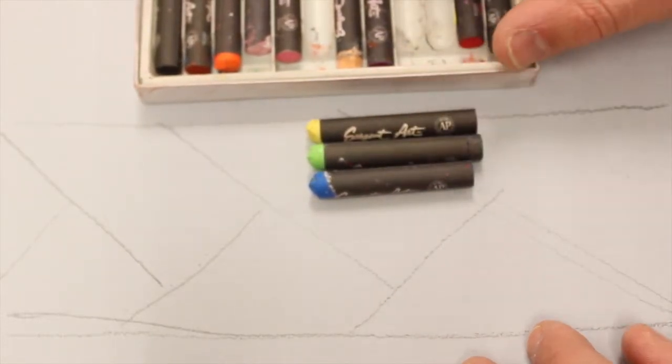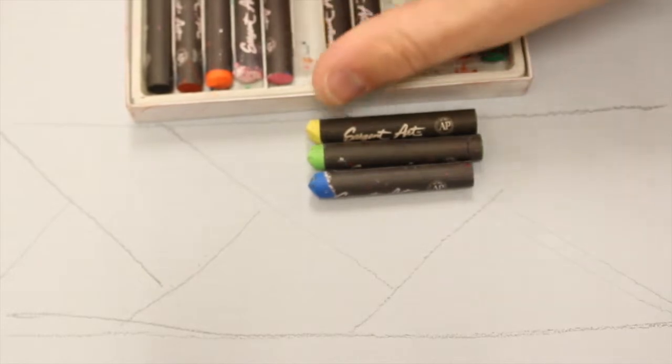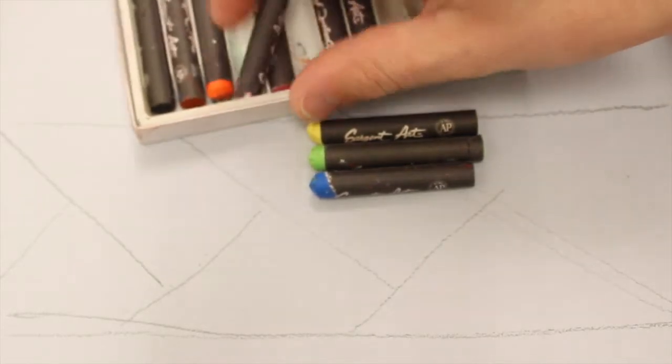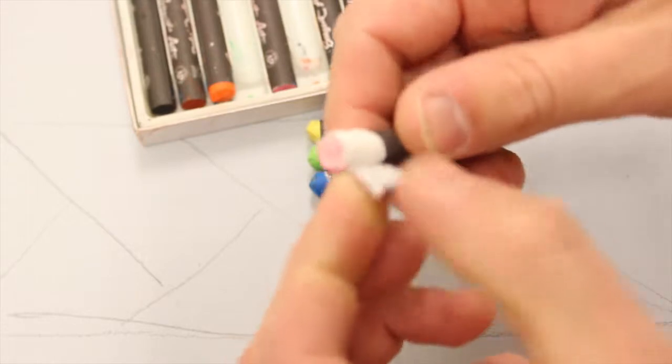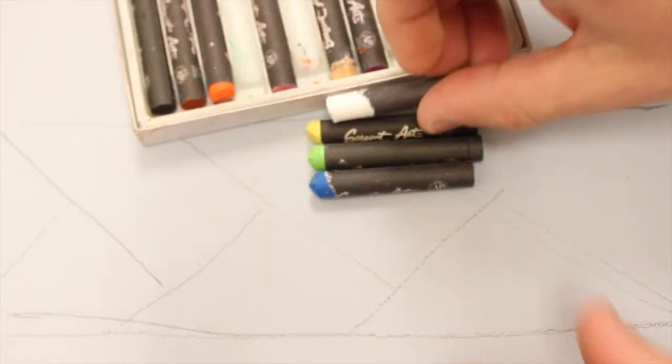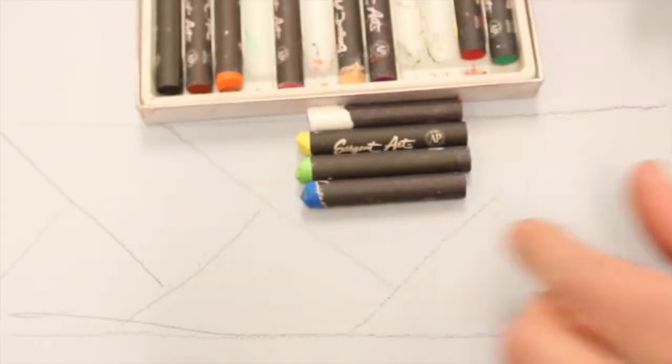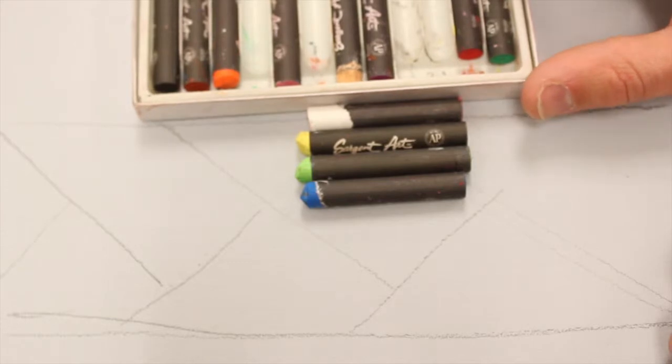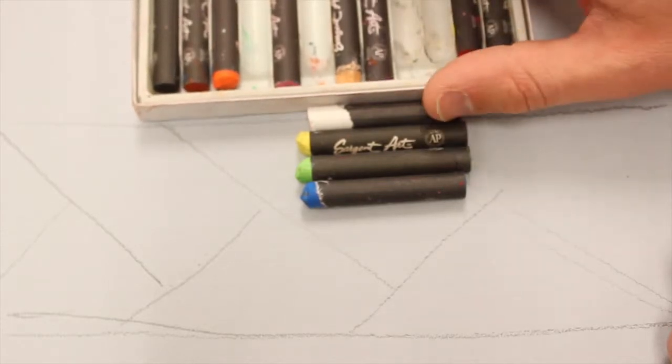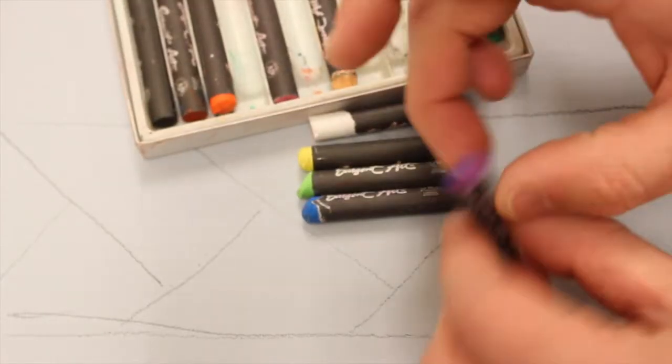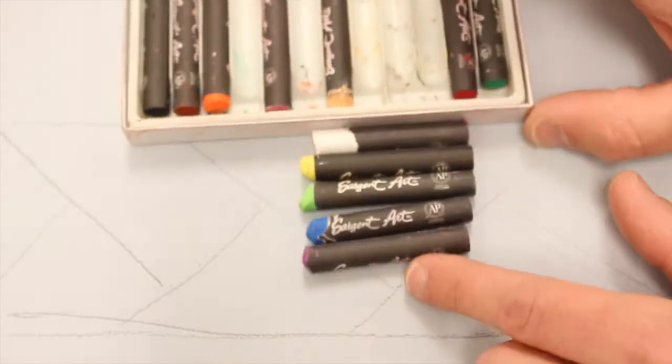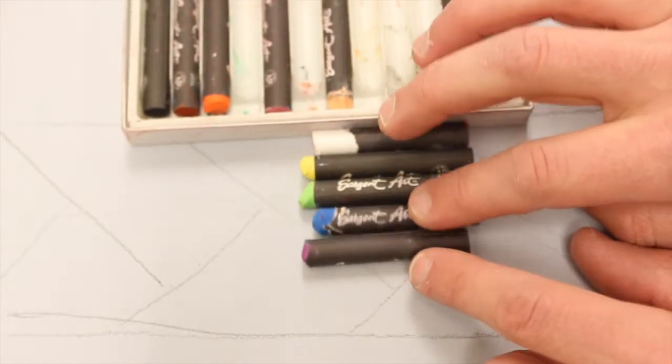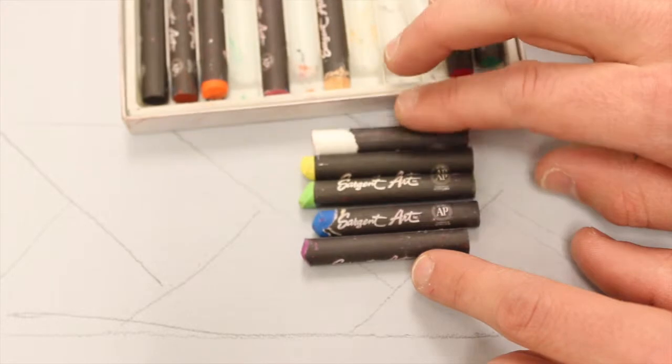We're also going to get some white. I have a white, I just need to peel this off. We need some white for the highlights. I'm going to go ahead and take a purple and put it in there too, just in case.